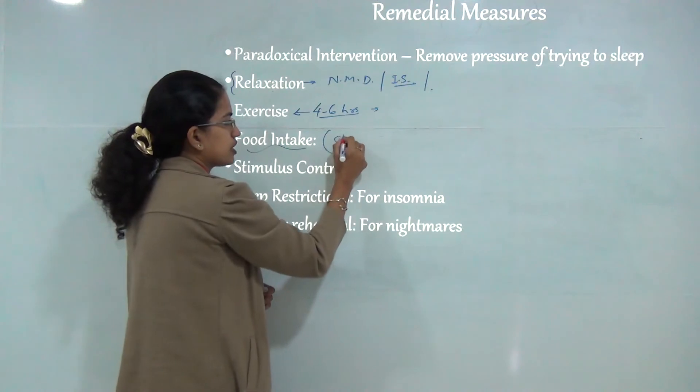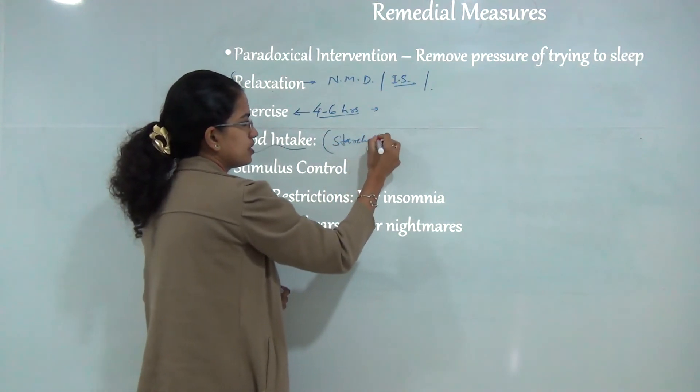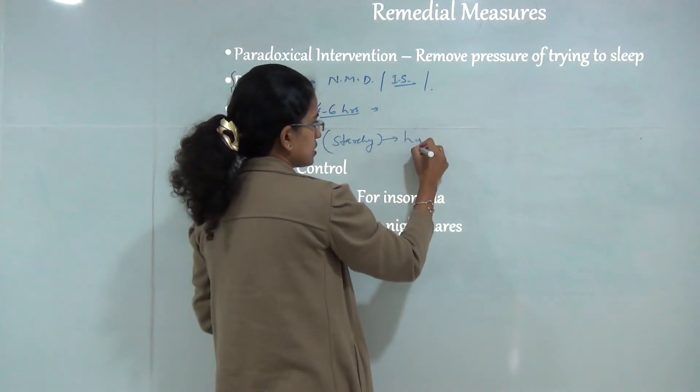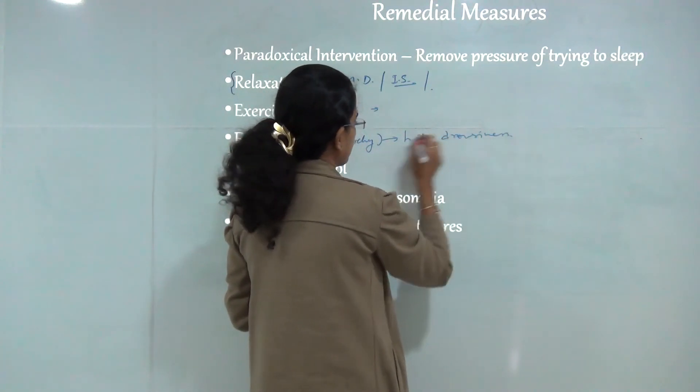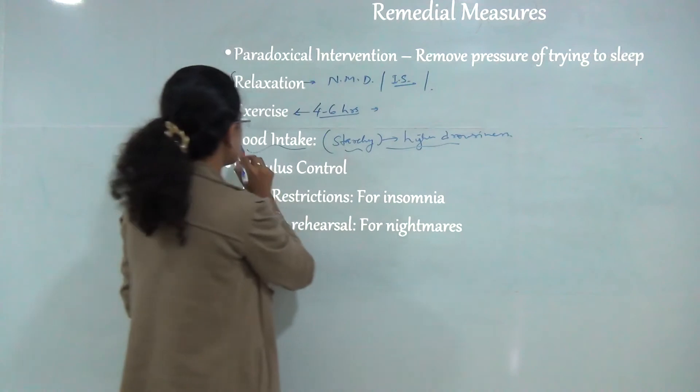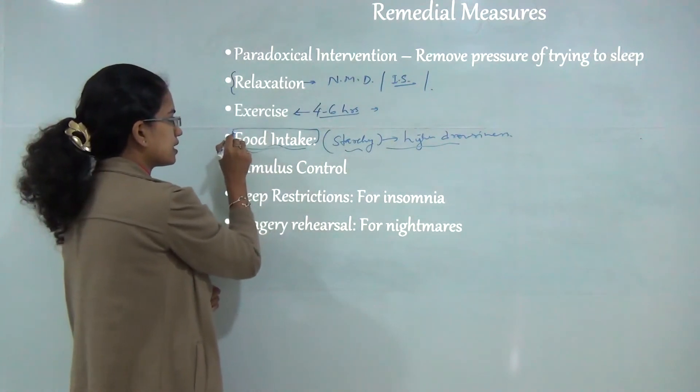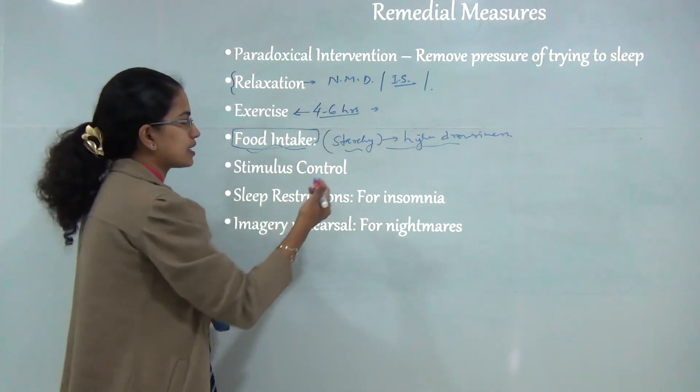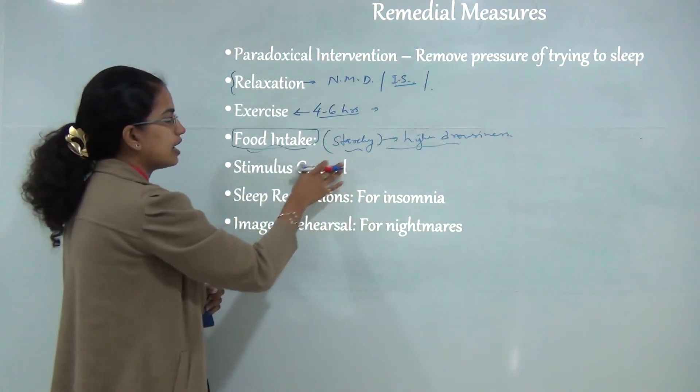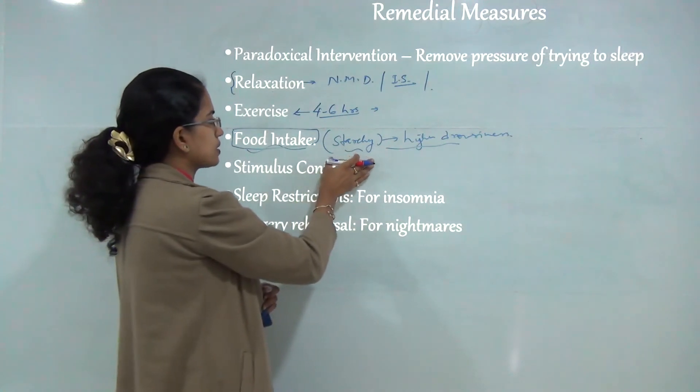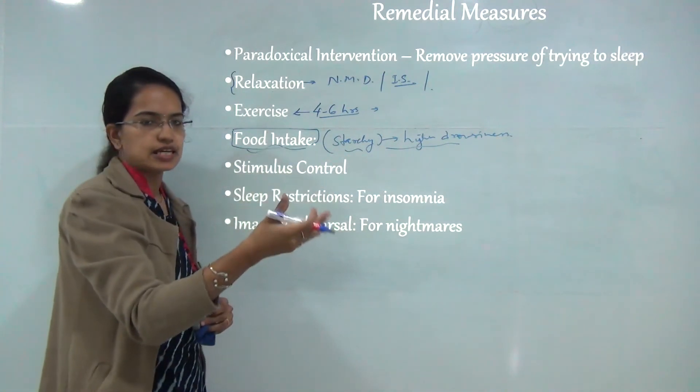Food intake - as we have already mentioned, starchy food leads to higher drowsiness. Based on the kind of disorder a person is suffering from, there can be changes in the type of food intake. If a person is insomniac, you can provide them with more starchy food. On the other hand, if a person is hypersomnic, you can provide them with less starchy food.